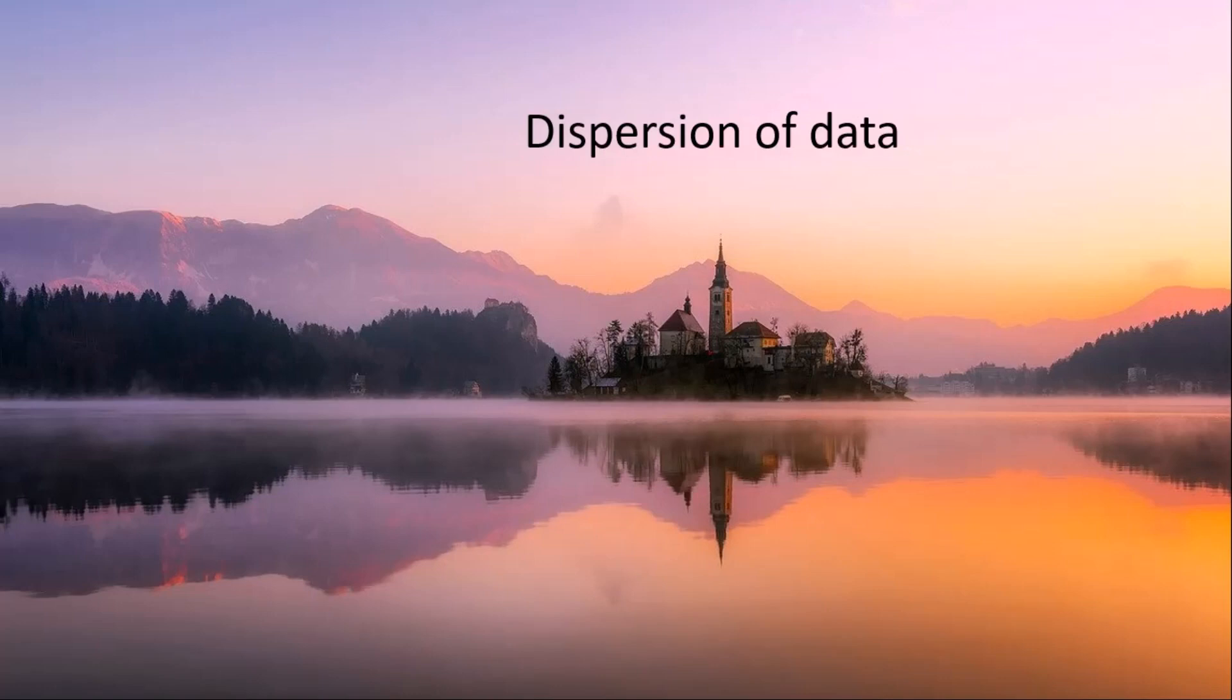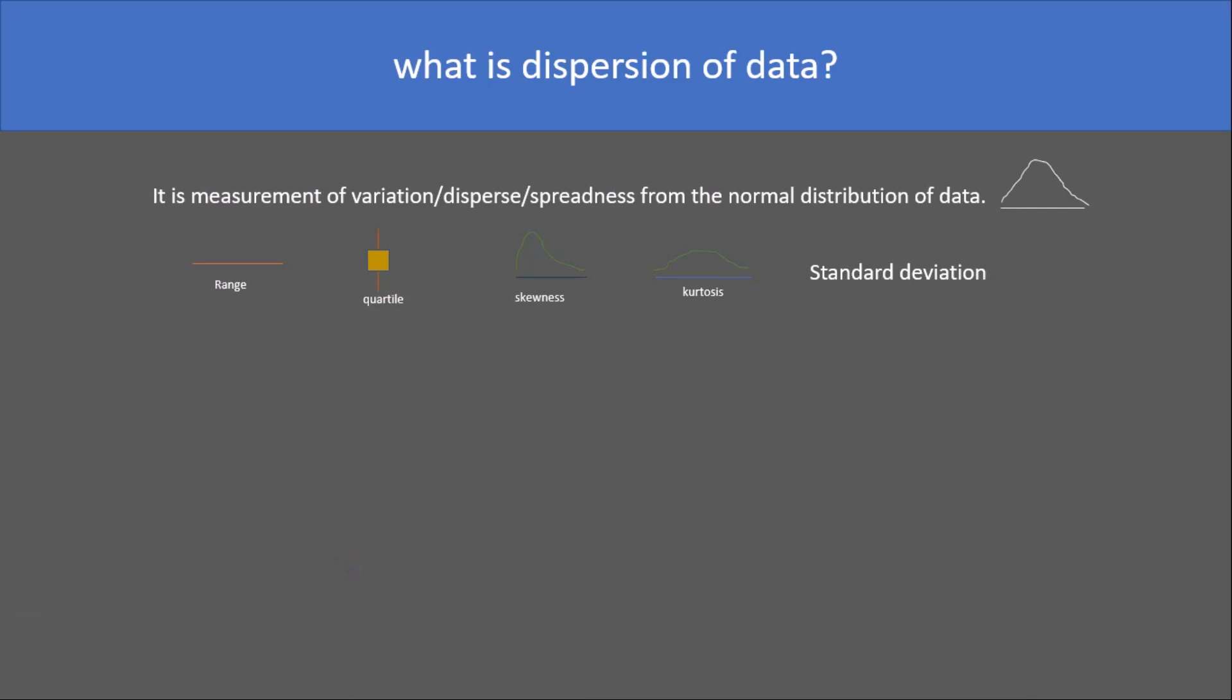Hey guys, in this video I will talk about dispersion of data. So let's get started. First question: what is dispersion of data? It is a measurement of variation, dispersion, or spreadness from the normal distribution of data.